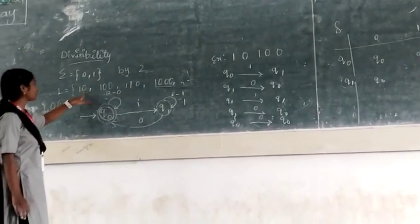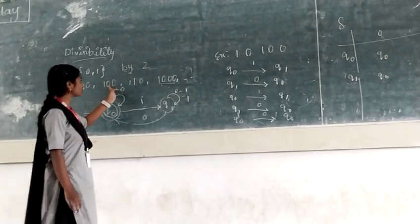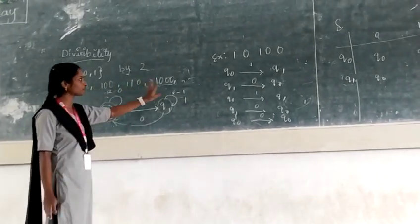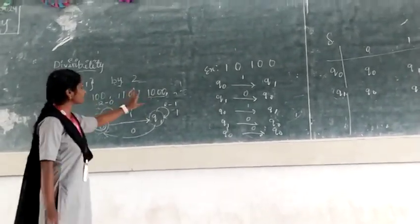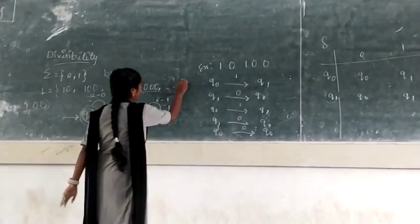First string is one zero. One zero is nothing but binary representation of two, binary representation of four, and binary representation of two. Since we get number of two variables, it is an infinite set.